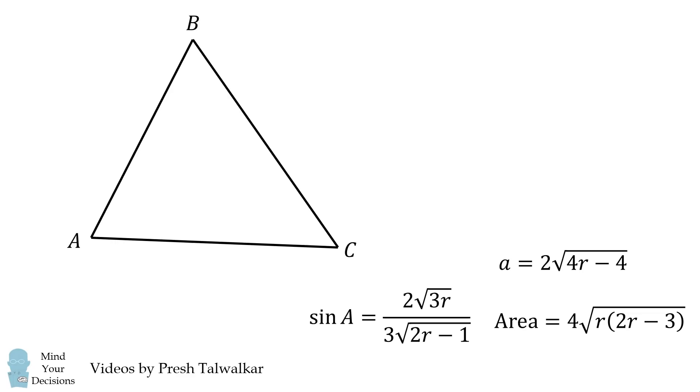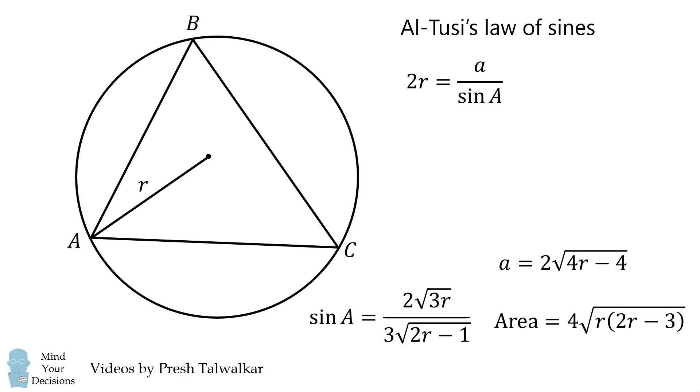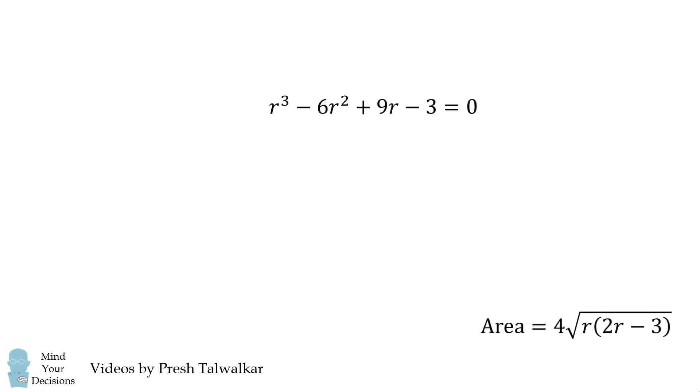We are going to use El-2C's law of sines. This states that 2 times the radius of the circle will be equal to a over the sine of A. We can substitute these values in and we get that 2R is equal to the following. From here, we simplify and we get a cubic equation. How can we solve this cubic equation?